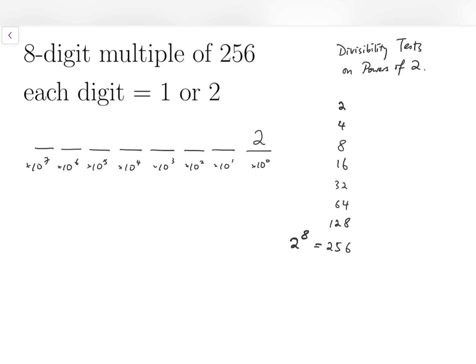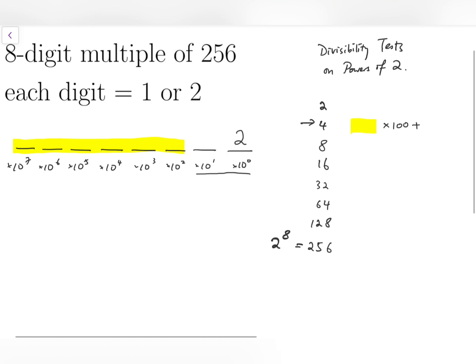Now for testing whether the number is a multiple of 4, we can only consider the last two digits because I can interpret the number this way: it's actually this block, the yellow block, times 100 plus the last two digits. And we know that 100 is already a multiple of 4.